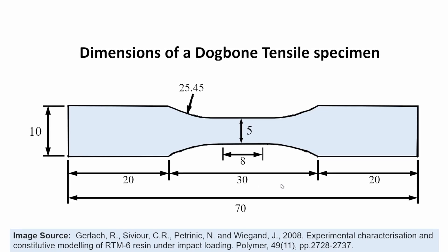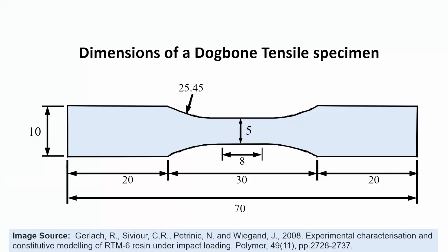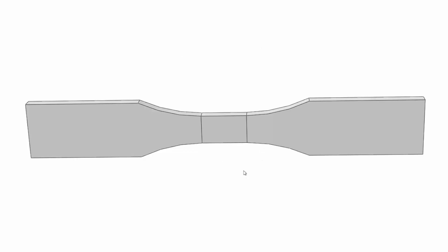The dimensions of a typical dog bone specimen for this setup are slightly different from what standards like ASTM specify, since those specimens are too large for a Split Hopkinson Pressure Bar. You need a small-size specimen — overall length of 7 cm, thickness of 1 cm, with a very small gauge section.